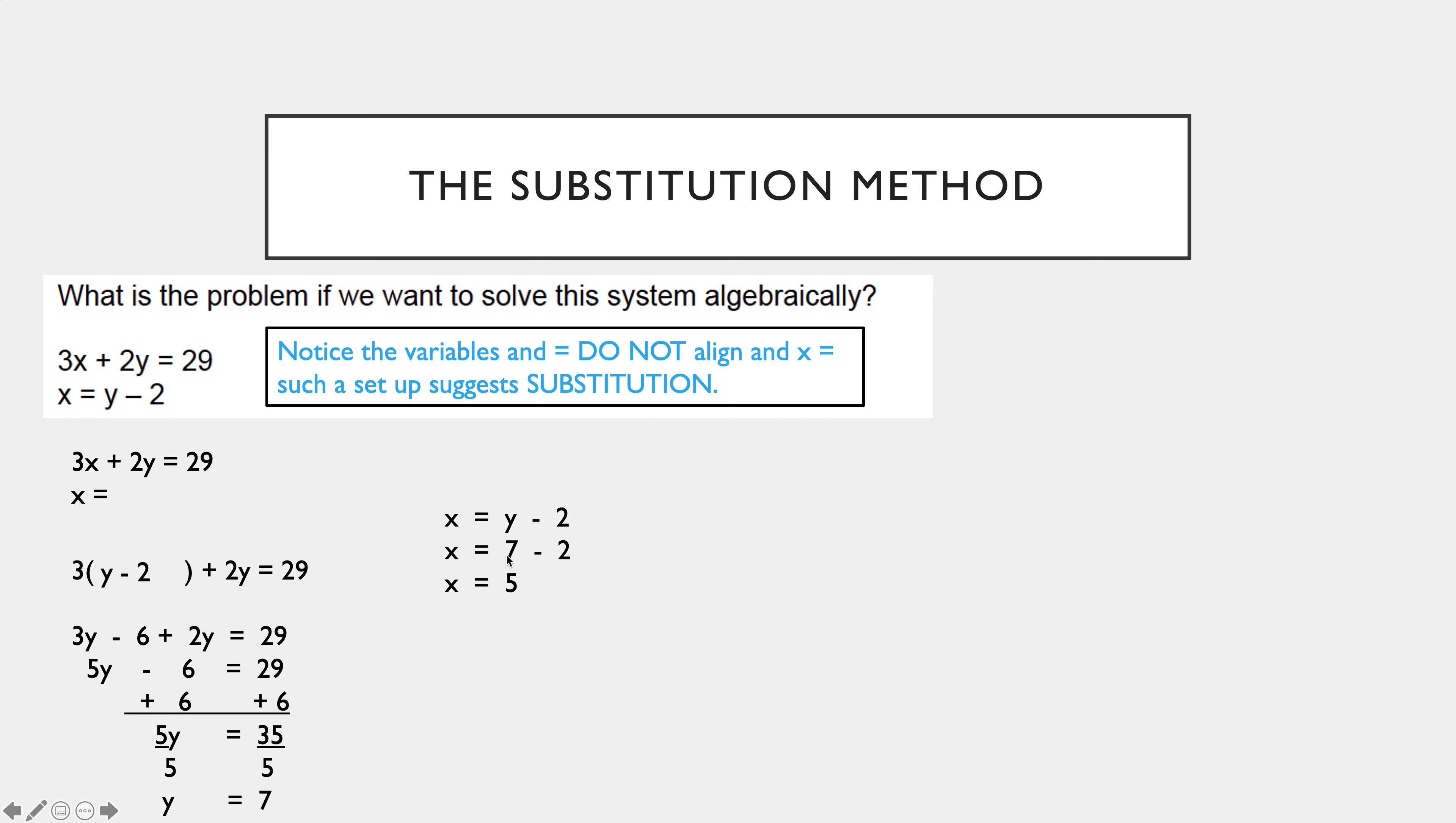So once I've got the fact that y is 7, I could substitute it in: 7 minus 2 is 5, x is equal to 5. So with substitution we don't line things up, we literally substitute just like four quarters for a dollar.